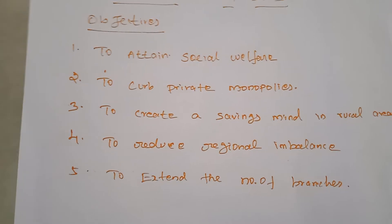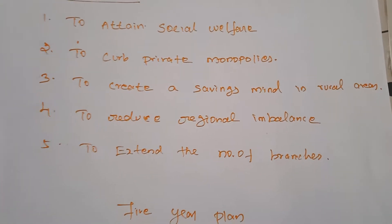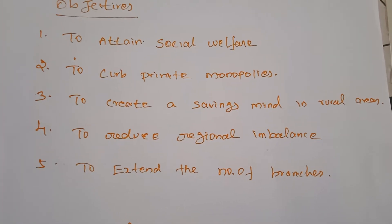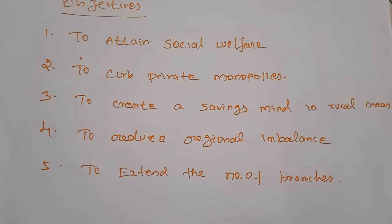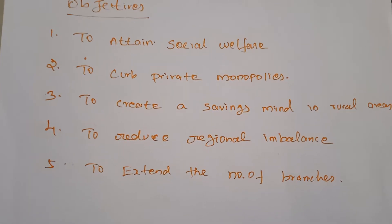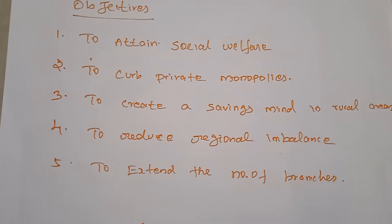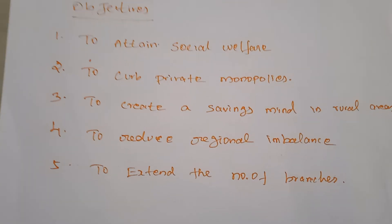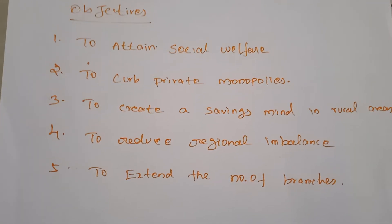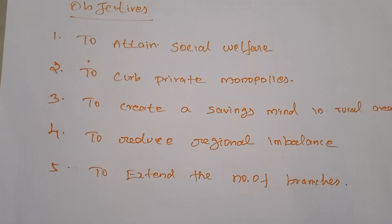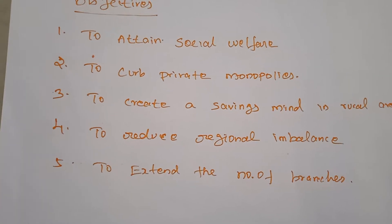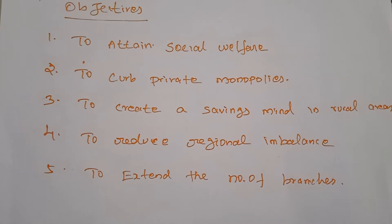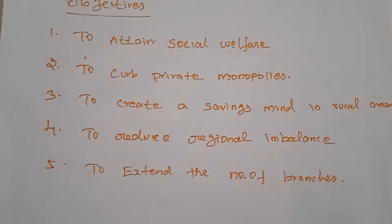After independence, the government of India adopted planned economic development. For this purpose, five-year plans came into existence since 1951. The main objective of economic planning aimed at social welfare. Before independence, commercial banks were in the private sector, and these commercial banks failed in helping the government achieve the social objectives of planning.